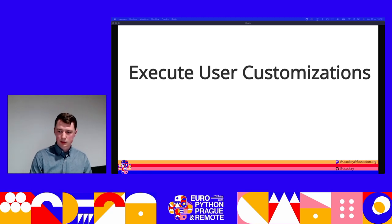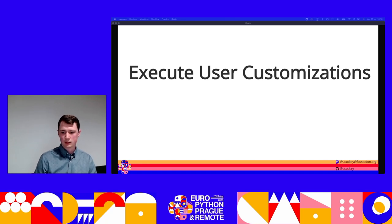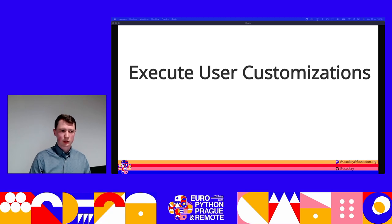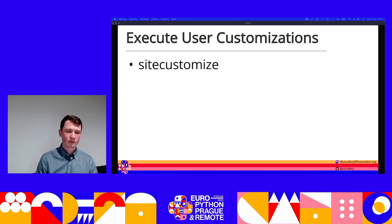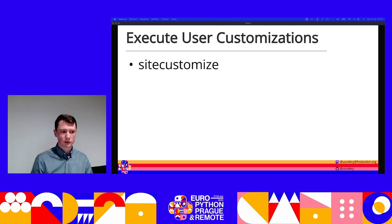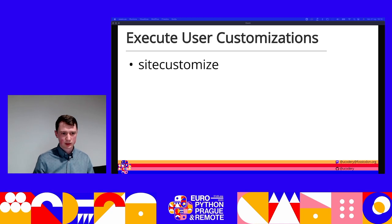Next are user customizations — hooks that site provides for other code to participate in the customization of startup. So far everything has been kind of prescriptive, but here site gives us opportunities to run arbitrary Python code before we get to our main script. The first way is through a module called `sitecustomize`. After site has inflated the full sys.path, it will attempt an import of `sitecustomize`. If this module exists in one of those directories, it will be loaded and all its global statements executed.